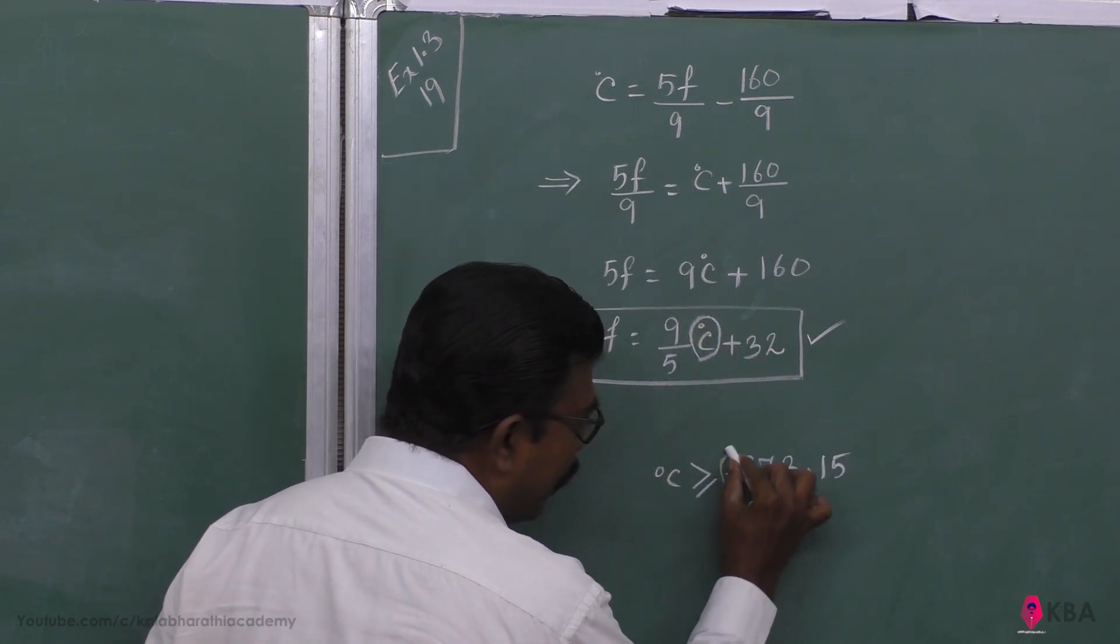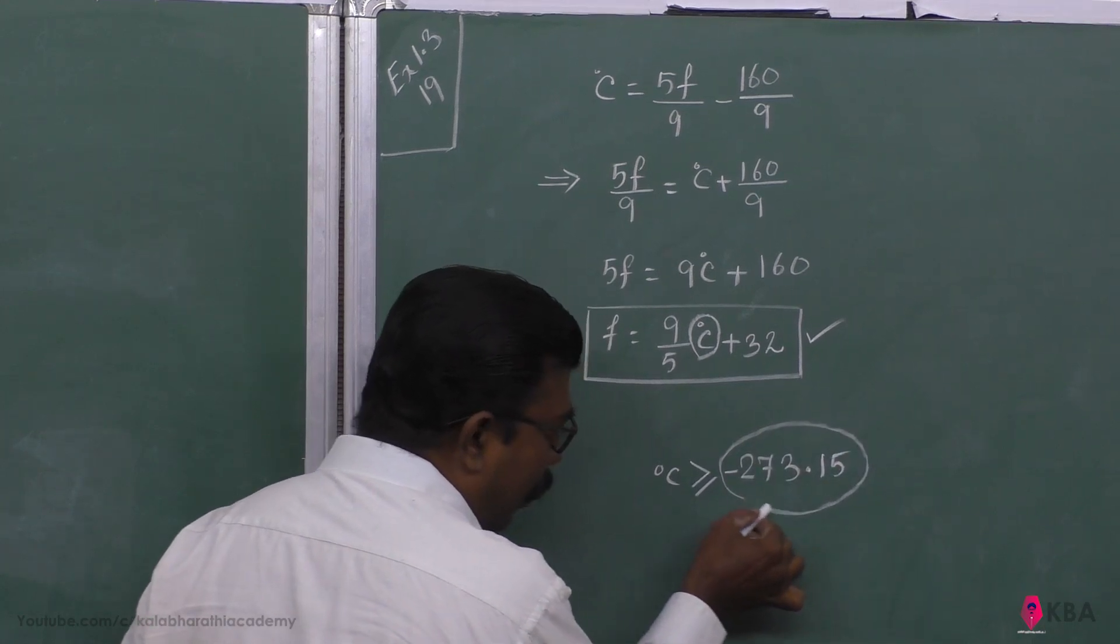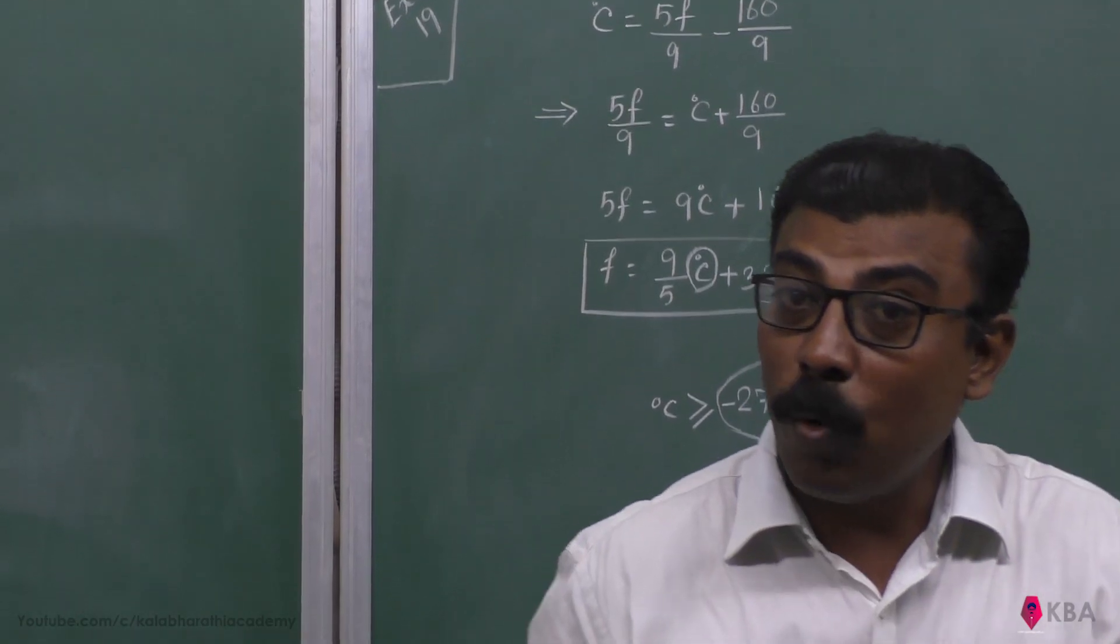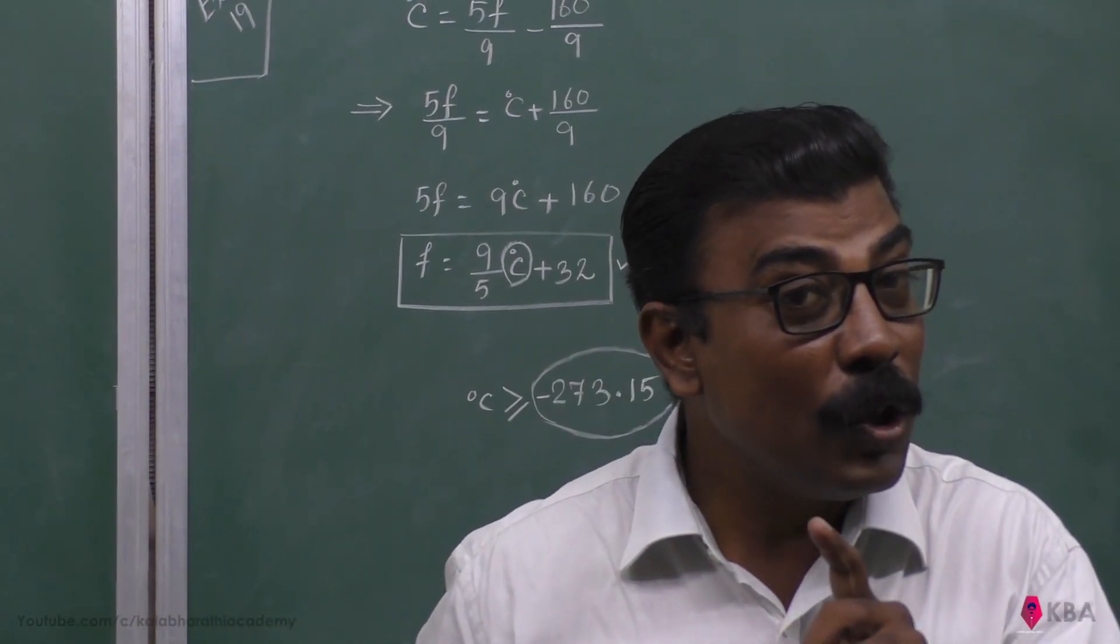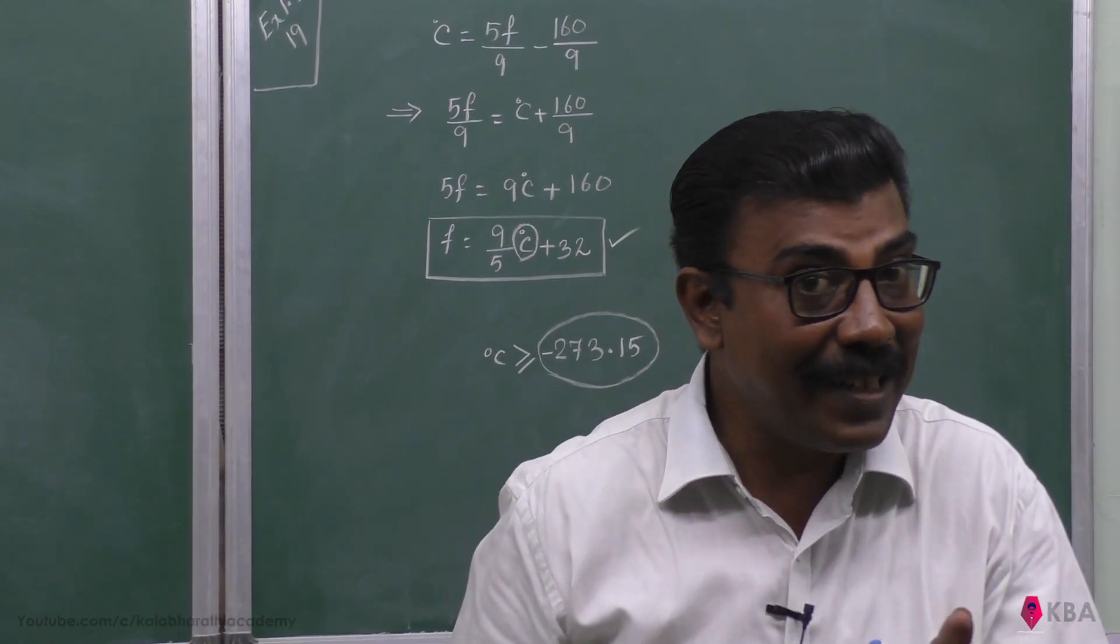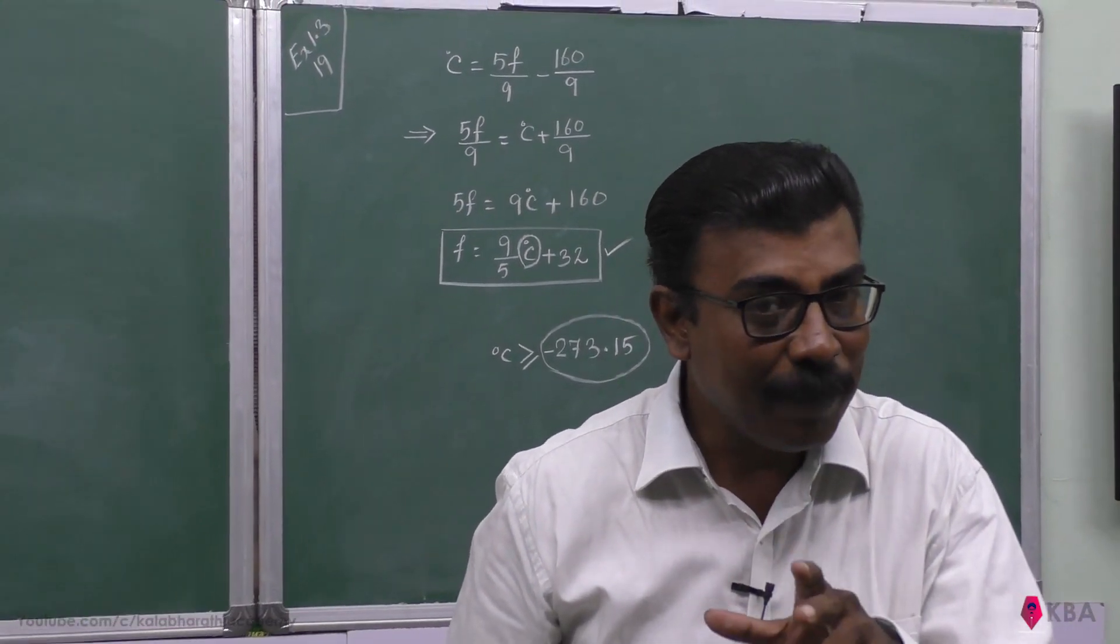Minus 273.15, minus 273.15, it is equal to 0 Kelvin, that is absolute temperature 0 Kelvin, and it is equal to 0 Kelvin.